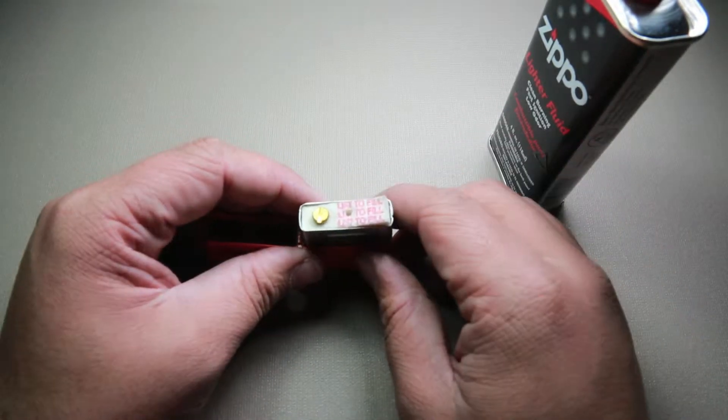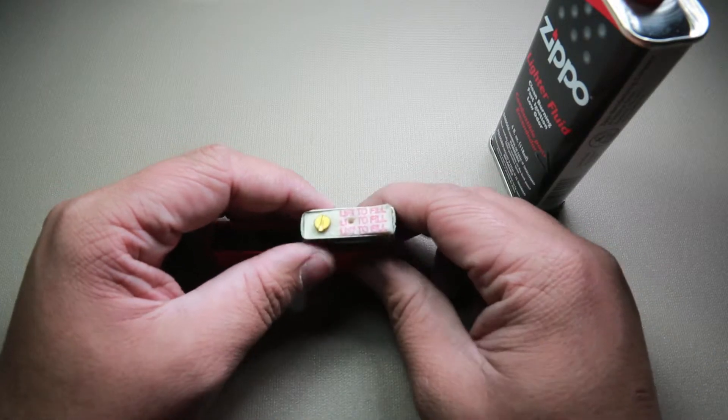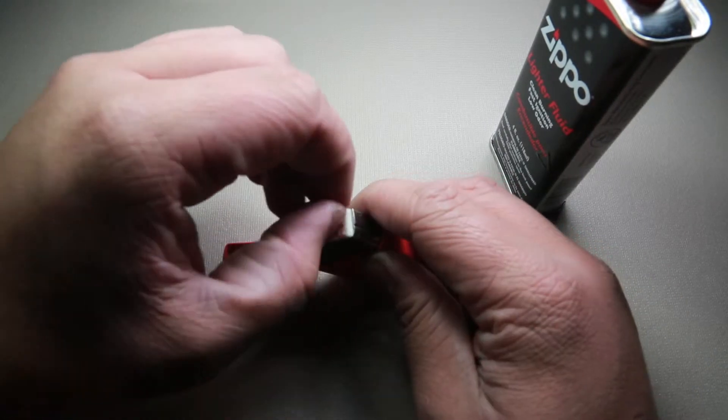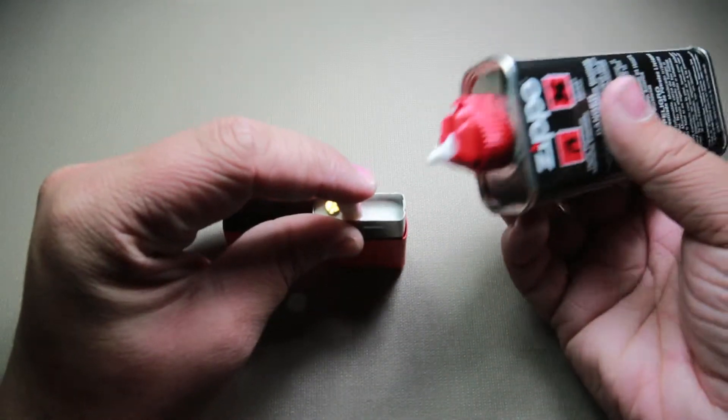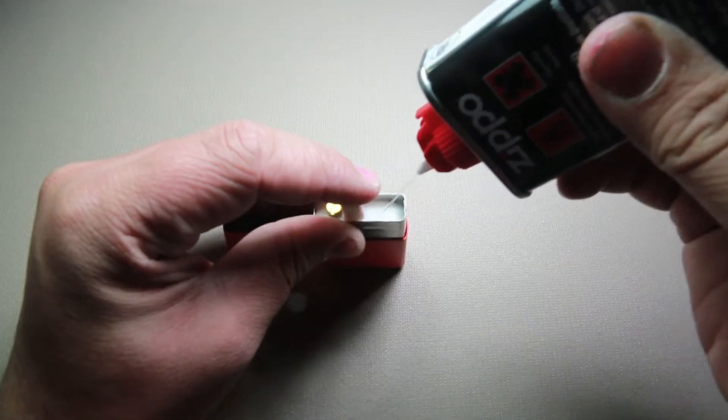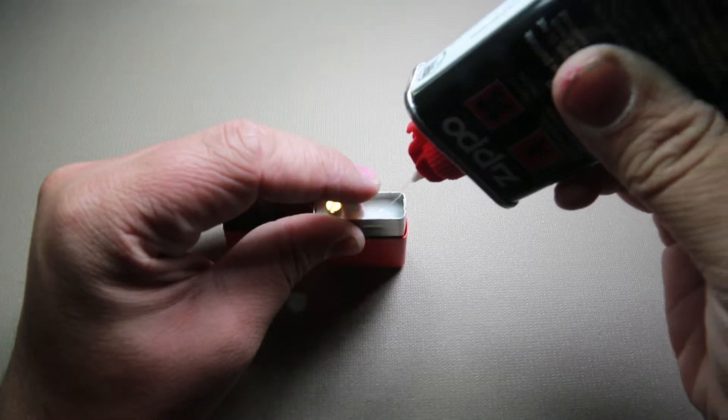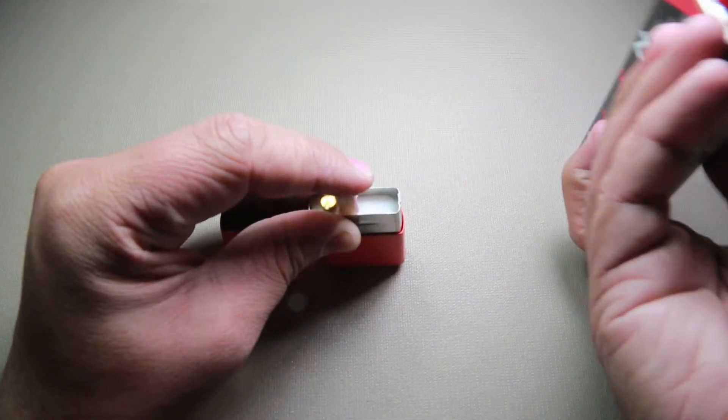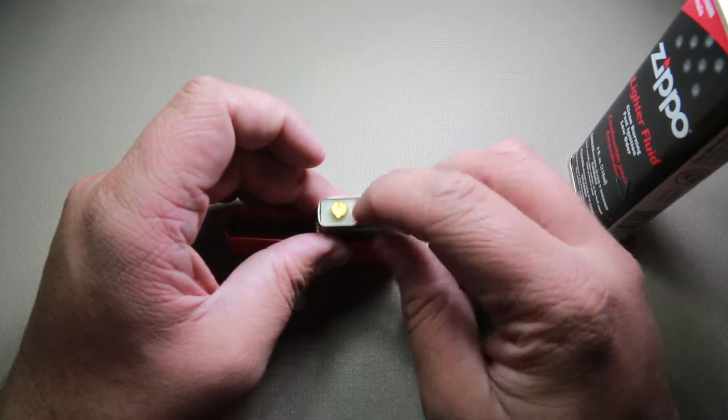Then you just want to do it again, so pull this back, grab your Zippo can of fluid, and then one, two, three, four, five. Okay, so now you just have to press this down a little bit.